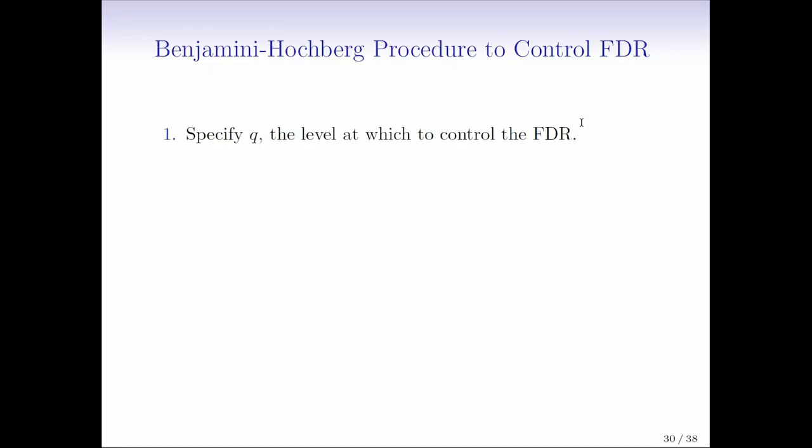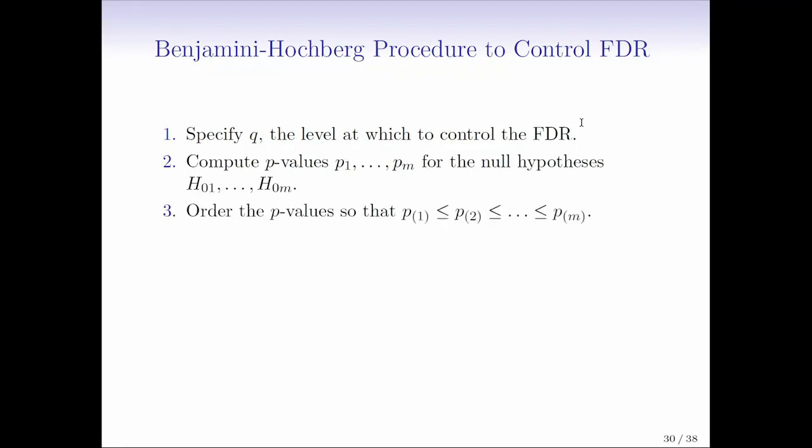First, you're going to specify Q. That's the level at which to control the false discovery rate. So when we were talking about type 1 error and family-wise error rate, we usually use alpha as our letter. And now our letter is going to be Q. Now we're going to compute P values for each of our M null hypotheses. We're going to order those P values, where P sub 1 with the parentheses indicates the smallest of the M P values, and P sub M indicates the largest of the M P values. So far, this looks a lot like that Holm procedure that Gareth showed us.